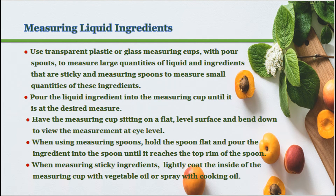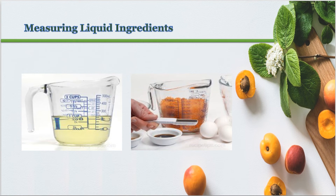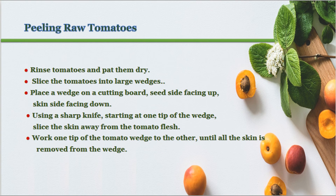Methods for measuring liquid ingredients: use transparent plastic or glass measuring cups with pour spouts to measure large quantities of liquid and ingredients that are sticky, and use measuring spoons to measure small quantities. Pour the liquid ingredient into the measuring cup until it is at the desired measure. Have the measuring cup sitting on a flat, level surface and bend down to view the measurement at eye level. When using measuring spoons, hold the spoon flat and pour the ingredient into the spoon until it reaches the top rim. When measuring sticky ingredients, lightly coat the inside of the measuring cup with vegetable oil or spray with cooking oil.